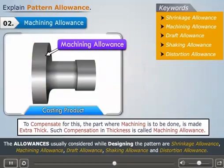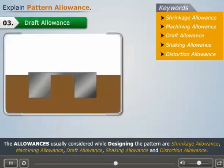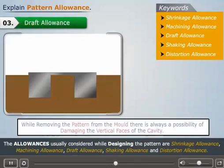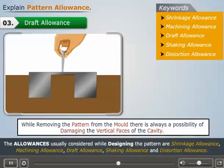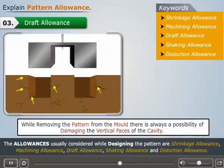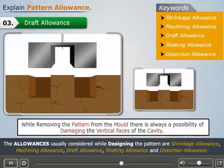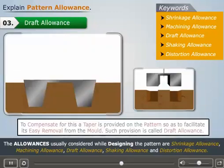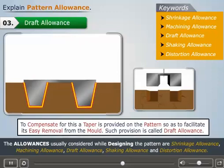Let us now understand what draft allowance is. While removing the pattern from the mold, there is always a possibility of damaging the vertical faces of the cavity. Therefore, to compensate for this, a taper is provided on the pattern so as to facilitate its easy removal.